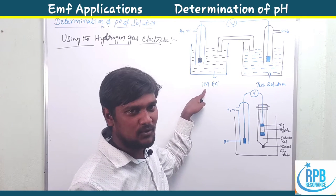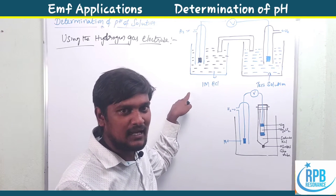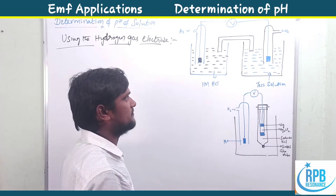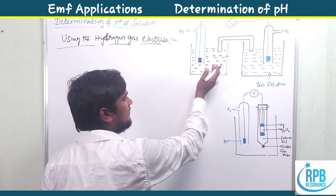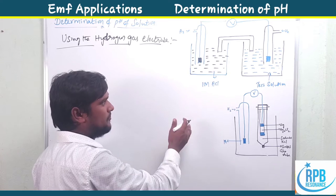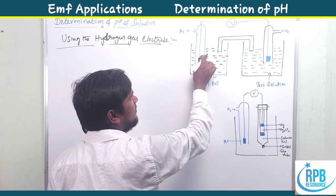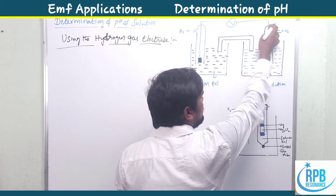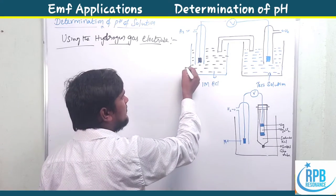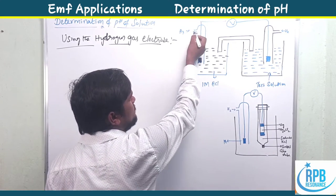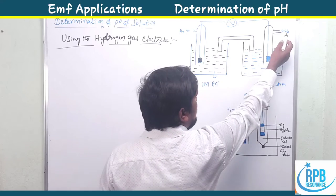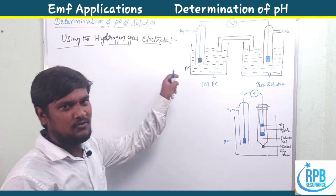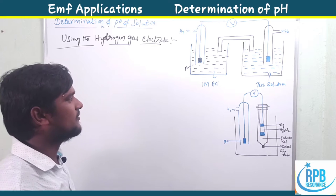This is the 1M HCl — the known solution — and this is the test solution. In the left-hand compartment, there is a platinum wire connected to the digital voltmeter. Here also a platinum wire connected to the digital voltmeter. These are the H2 gas inlets. This is the simple setup of the hydrogen gas electrode.